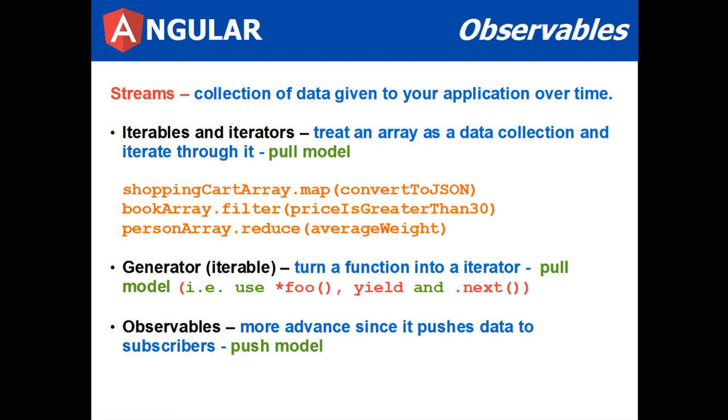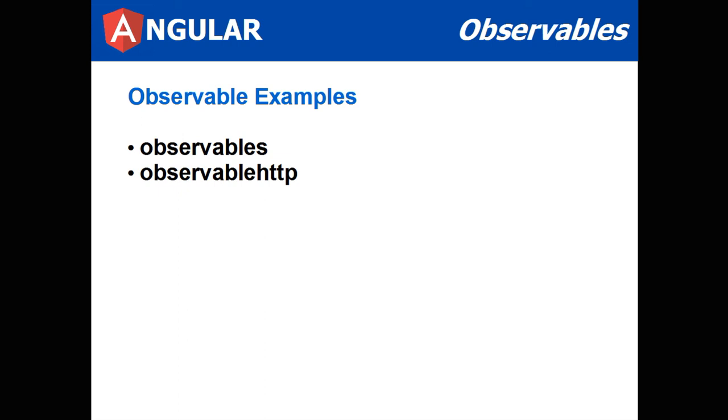But observables are more advanced since they push data to the subscribers using the push model. I'm going to talk about two examples. One is a basic event type of observable, and the other is using observables by calling web services.